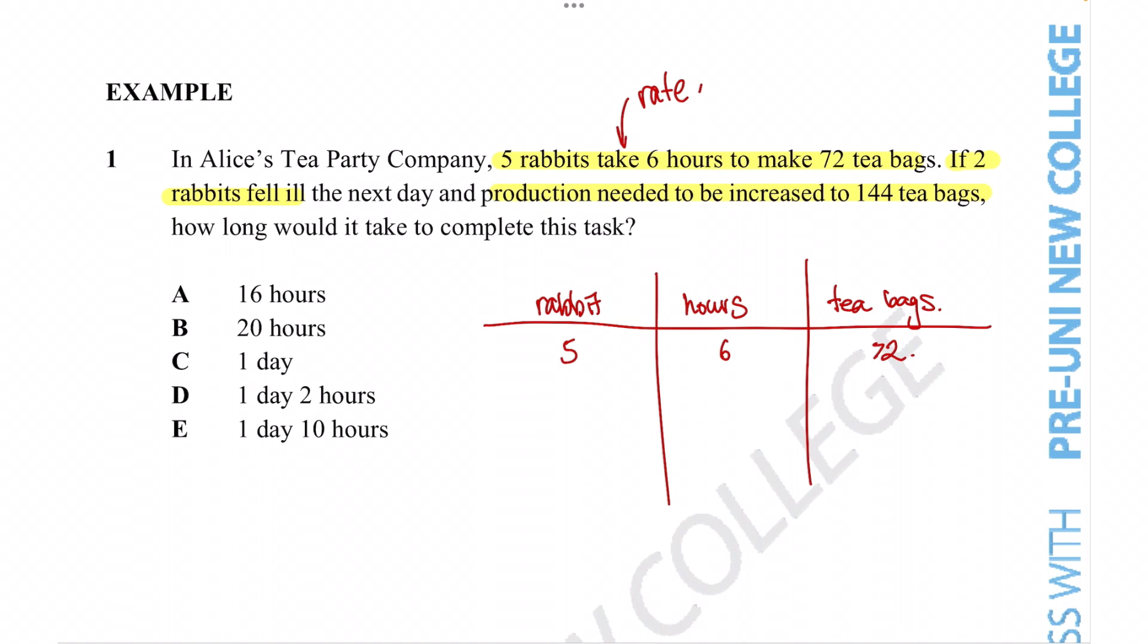Before we actually move on, because the question wants us to figure out how many hours it takes for a different number of rabbits to make these tea bags, what helps is to figure out the unit rate. And all that means is to figure out how many hours is needed for just one rabbit to complete the task. And then you can use that information as a basis to figure out how many rabbits, sorry, how many hours are needed when three rabbits take the task on instead of the one.